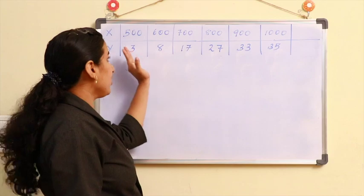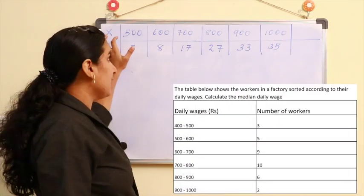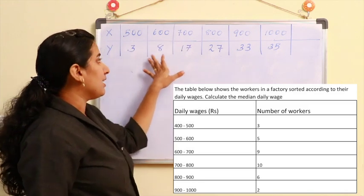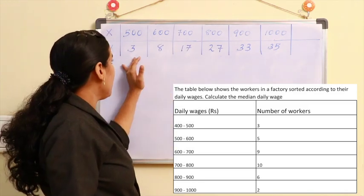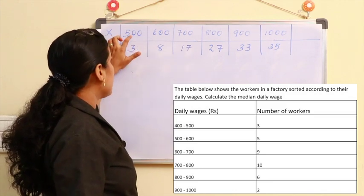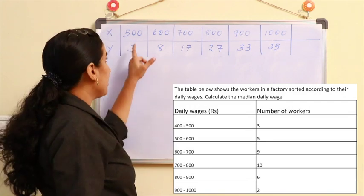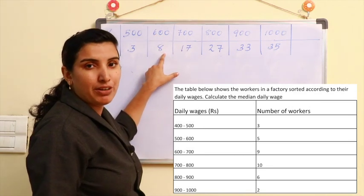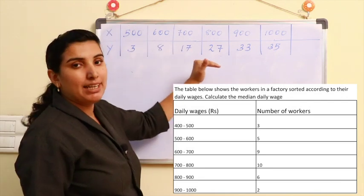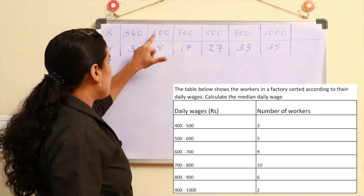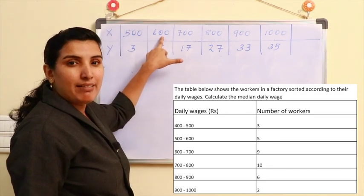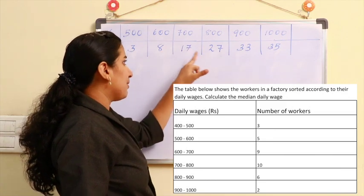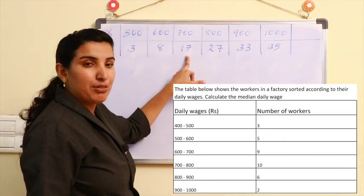For the data, we have the H axis representing daily wages and the Y axis representing the number of workers. For up to 500 in daily wages we have 3, add 600, and the number of people in that interval is 80. The cumulative frequency up to 600-700 is 17.